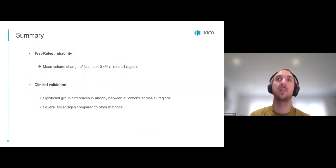In summary, our framework has a mean volume change in the test-retest dataset of less than 0.4% across all three evaluated regions, and shows significant group differences between all cohorts in all evaluated regions. Our method outperforms multi-time point methods like FreeSurfer. It outperforms ANTs and Jacobian for clinical validation of the hippocampus in performance and speed. And it performs in line with the highly optimized BSI method across all validated regions.